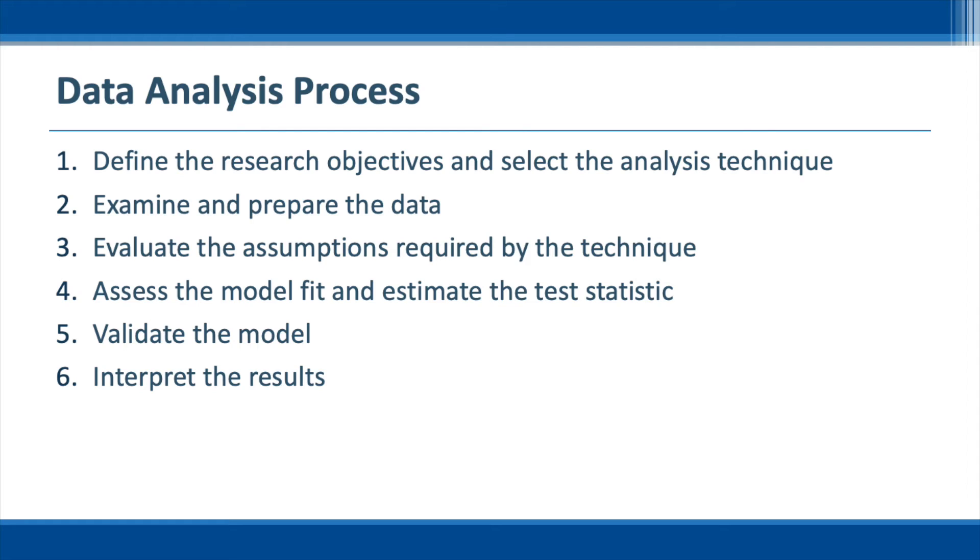In stage 5, we need to interpret the results. Basically, we test the relationships between variables. For example, what independent variables have significant effects on the dependent variable, and what is the magnitude of these effects. The objective is to identify empirical evidence of the relationship in the sampling data that can be generalized to the total population.